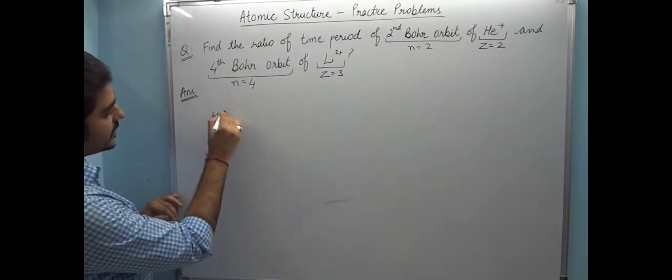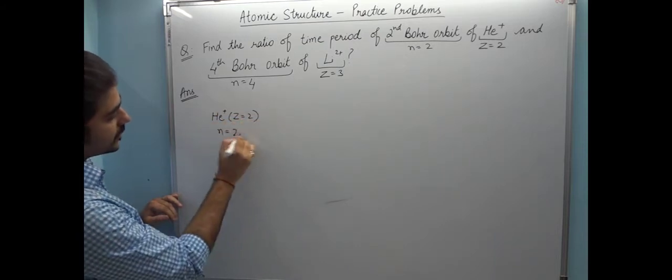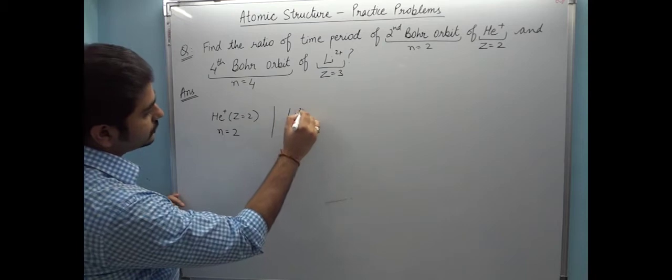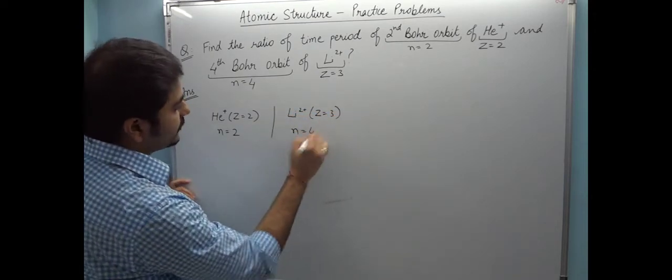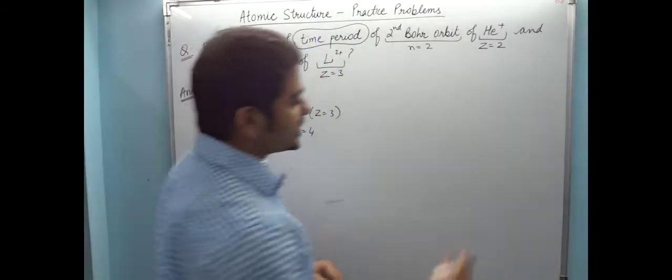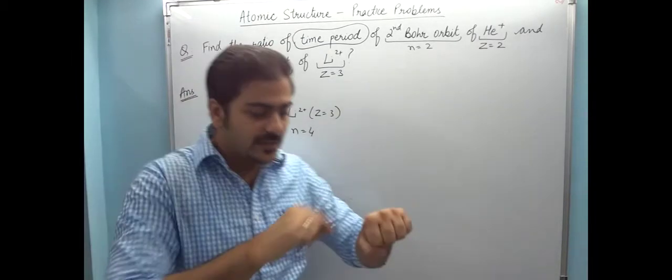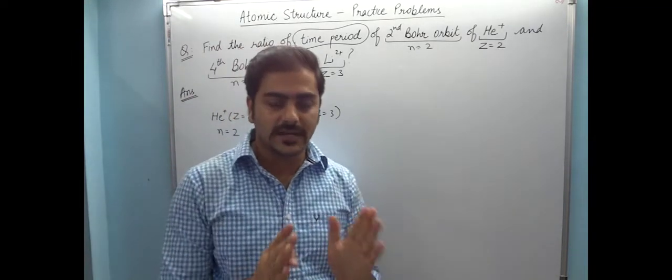Second Bohr orbit means n=2. So let's write this: helium Z=2, second orbit; lithium Z=3, fourth orbit. Now we are asked about time period. Time period basically means: the electron is running around the nucleus, so how much time is required for the electron to complete one circle?